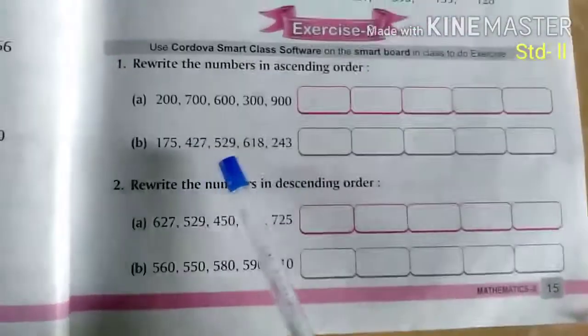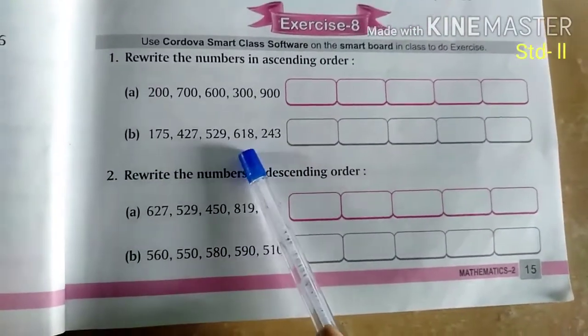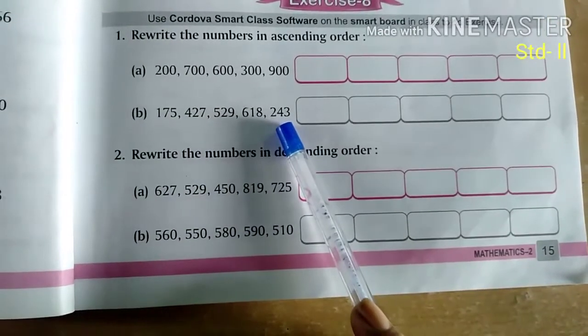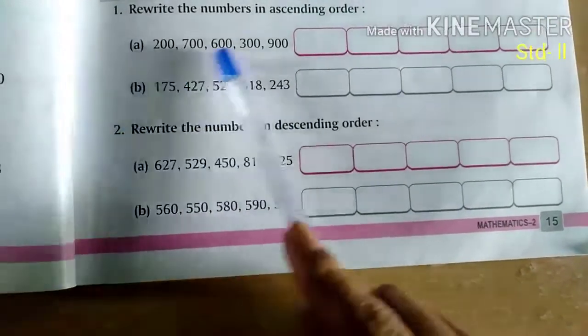Now next one is 175, 427, 529, 618 and 243. Now which is the smallest in this?